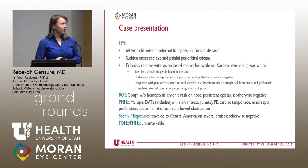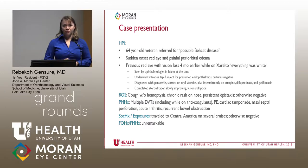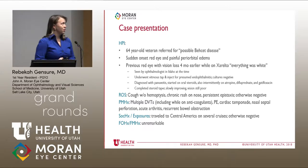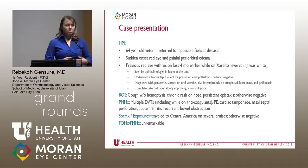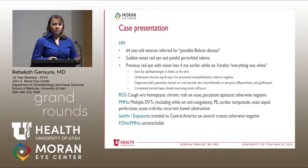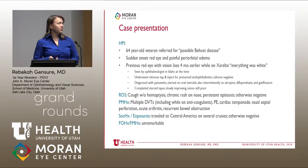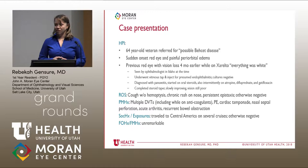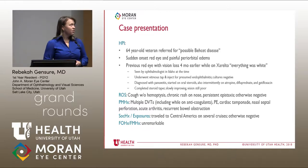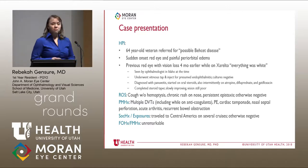He was subsequently diagnosed with pan uveitis and started on steroids with topical drops, doing somewhat better on the steroid taper, which he completed prior to seeing us. His vision remained poor, and he developed new onset pain and redness. On review of systems, he had a cough without hemoptysis or production, a chronic rash on his nose, and recurrent epistaxis throughout his life that had been worsening.